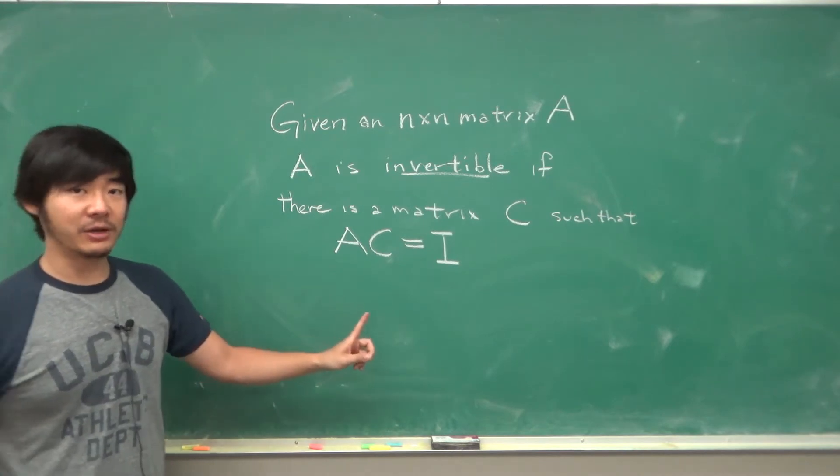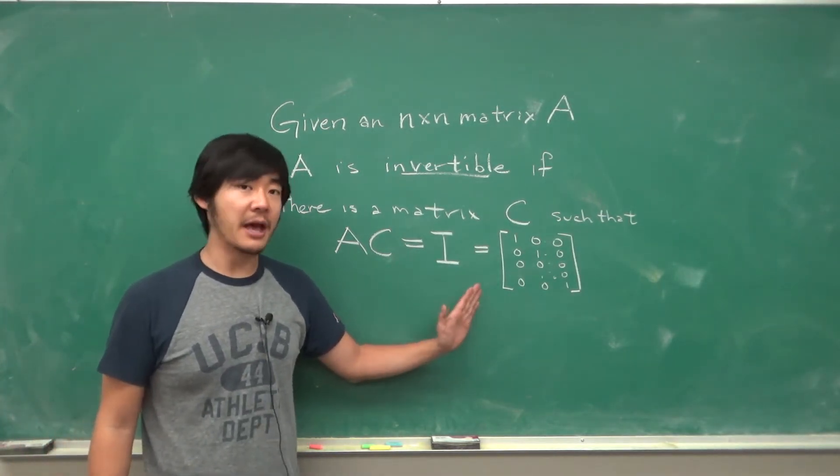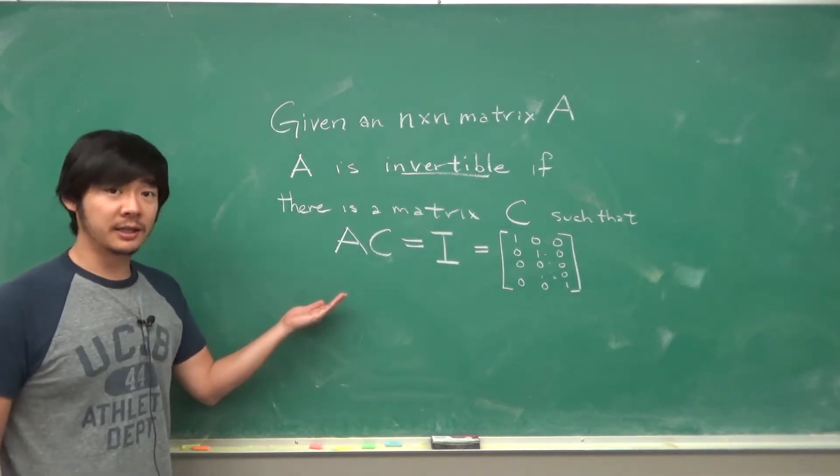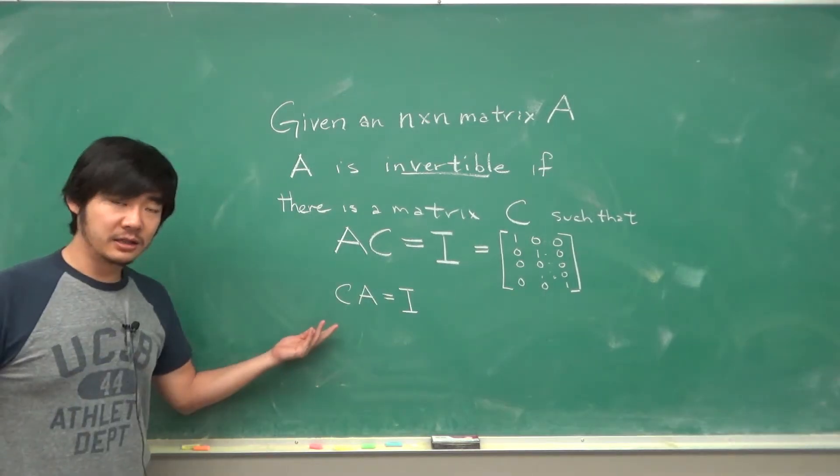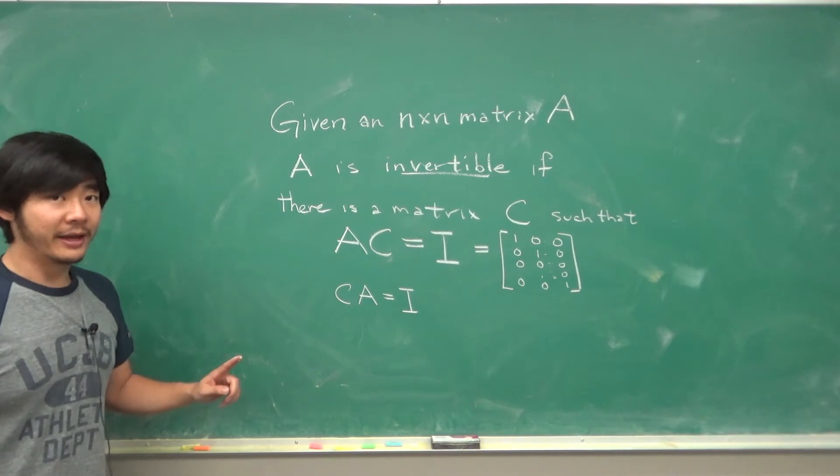Recall the identity matrix is a square matrix with ones on the diagonal and zeros everywhere else. We can show that if such a matrix exists then it is commutative, which means you can switch the order, and that it's also unique.